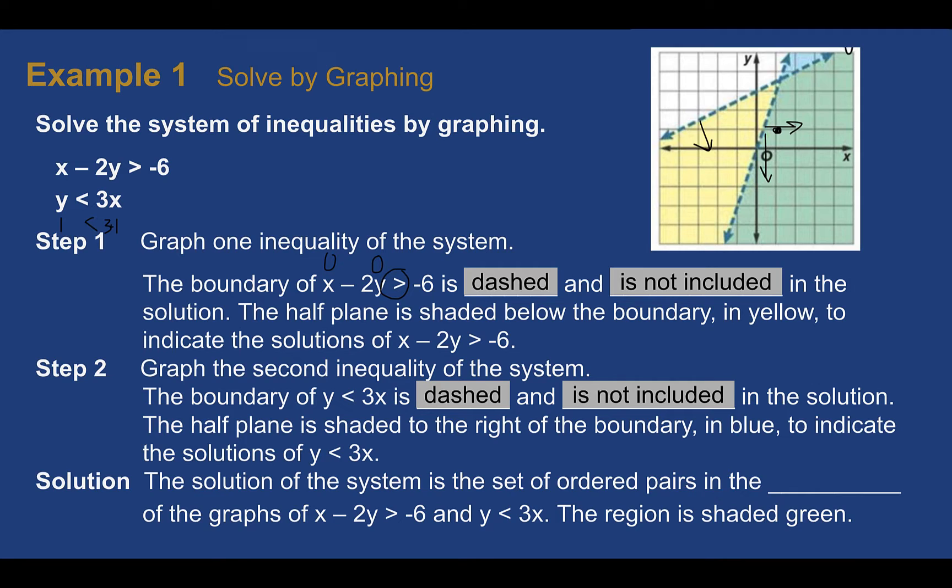Our solution set, then, is going to be this entire area where those two things intersect. It's the double shaded region, which is what I'm going to keep calling it from now on. Here we can see that region is green. It's overlapping yellow and blue.